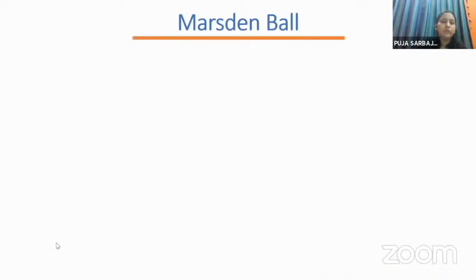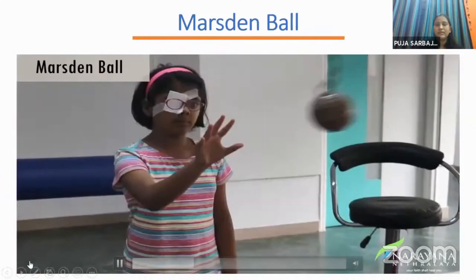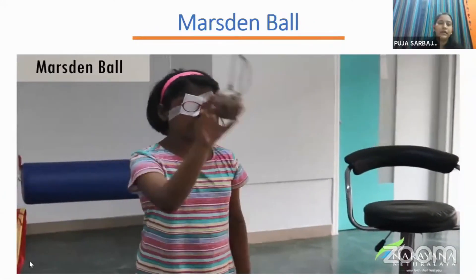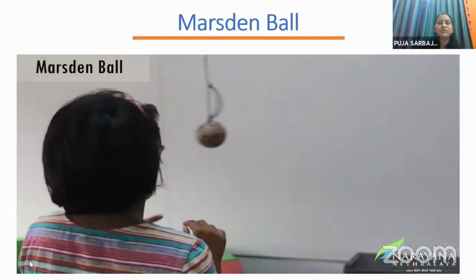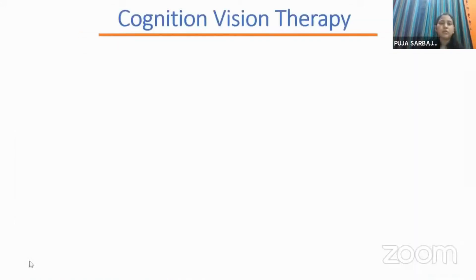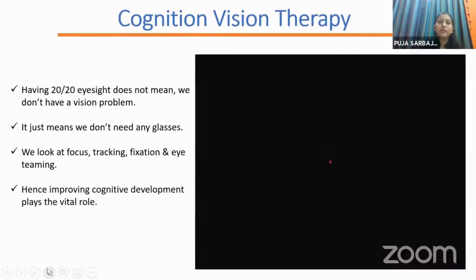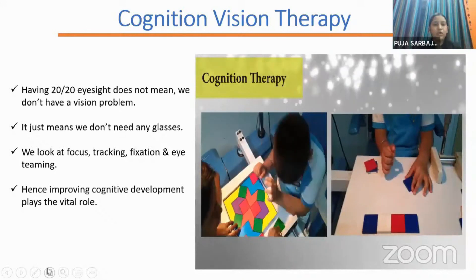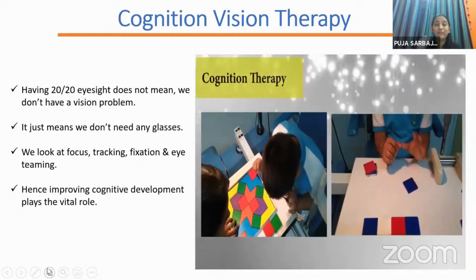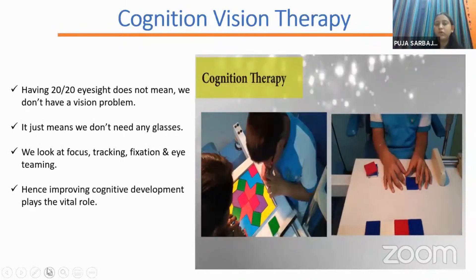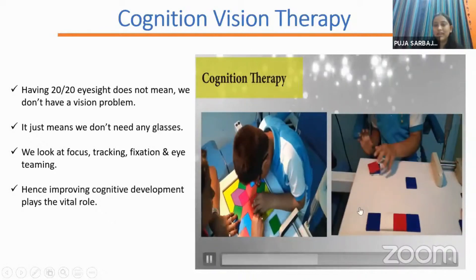We use the Marsden ball for eye-hand coordination. For a child with CVI with amblyopia, we start binocularly and then shift to patching with the Marsden ball. For cognitive vision therapy — even if vision is 20/20 — the child may have difficulty copying from the board, focusing, and eye-hand coordination. We address all of this through cognitive visual development activities.